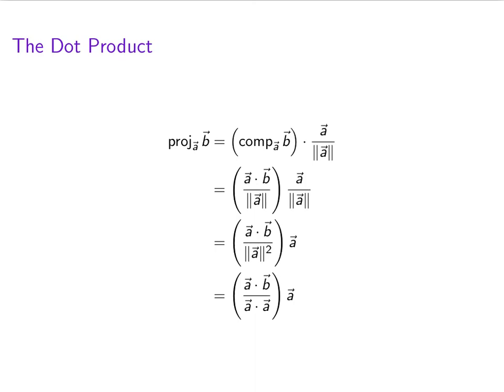Again, keep in mind that the expression in parentheses is a scalar, because when you compute the dot product of two vectors, you get a scalar. A · A is the same thing as ||A||².